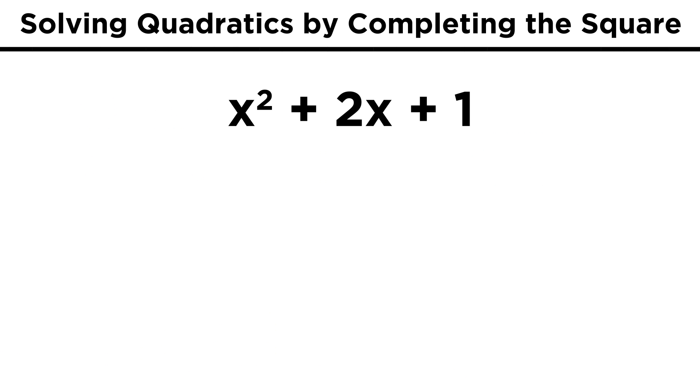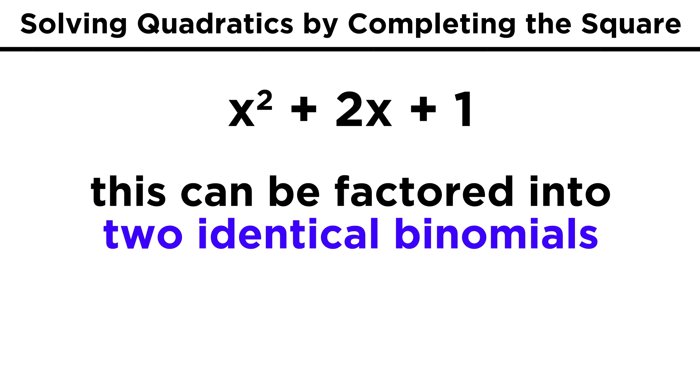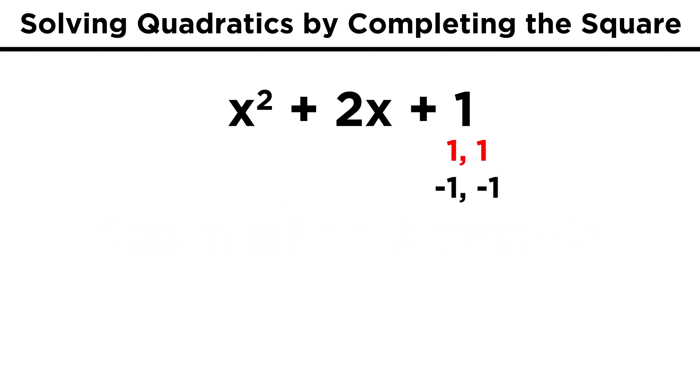First, consider the following polynomial, x squared plus 2x plus 1. This can be factored, but furthermore, it can be factored into two identical binomials. The factors of 1 are 1 and 1, or negative 1 and negative 1, and the positive ones do indeed add up to 2, so we can factor this into x plus 1 times x plus 1.